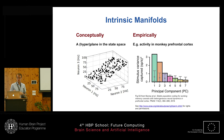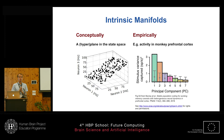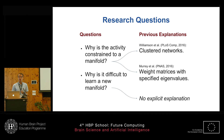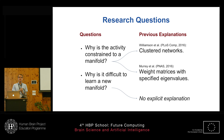This does not occur in a randomly connected network. So my question is: in what network does it occur? How can you connect a network so that the activity becomes low dimensional?